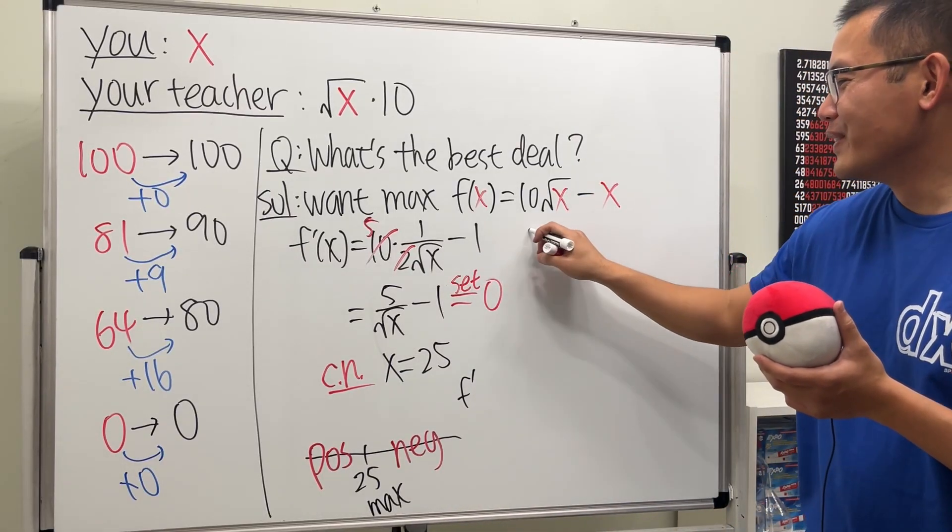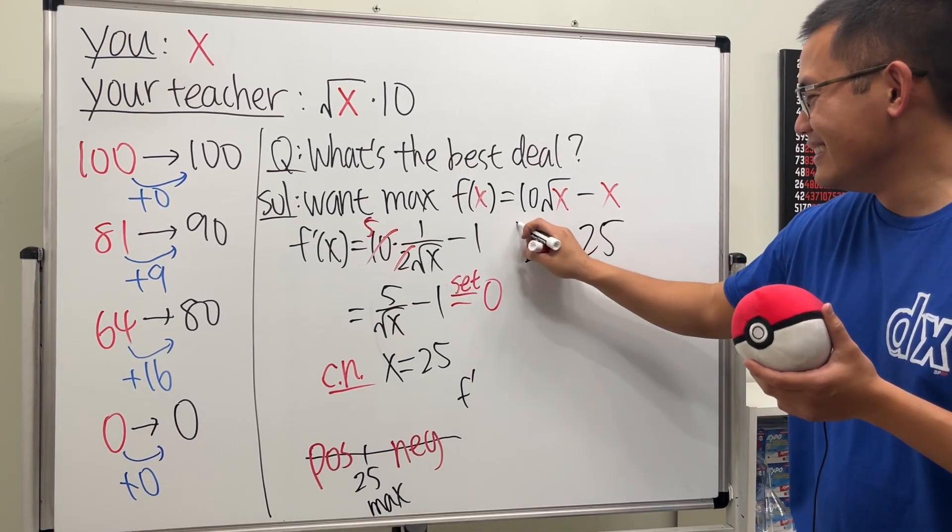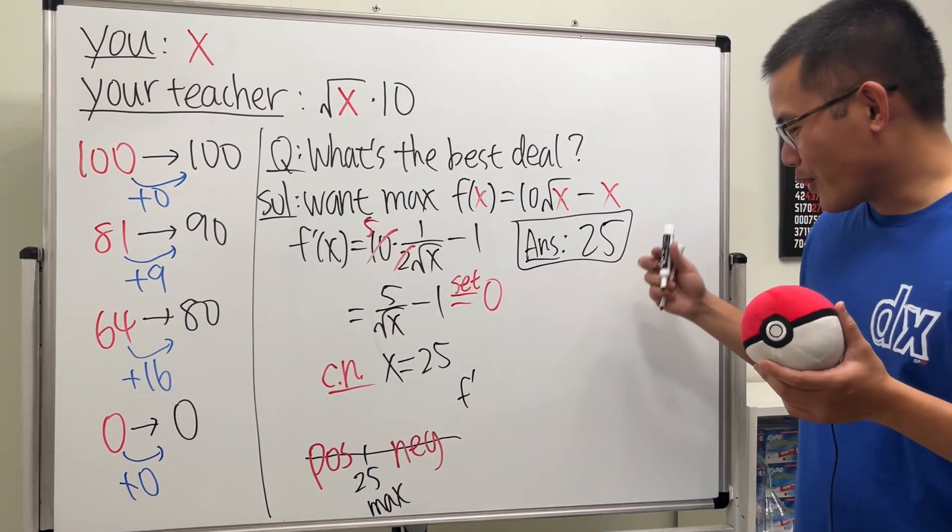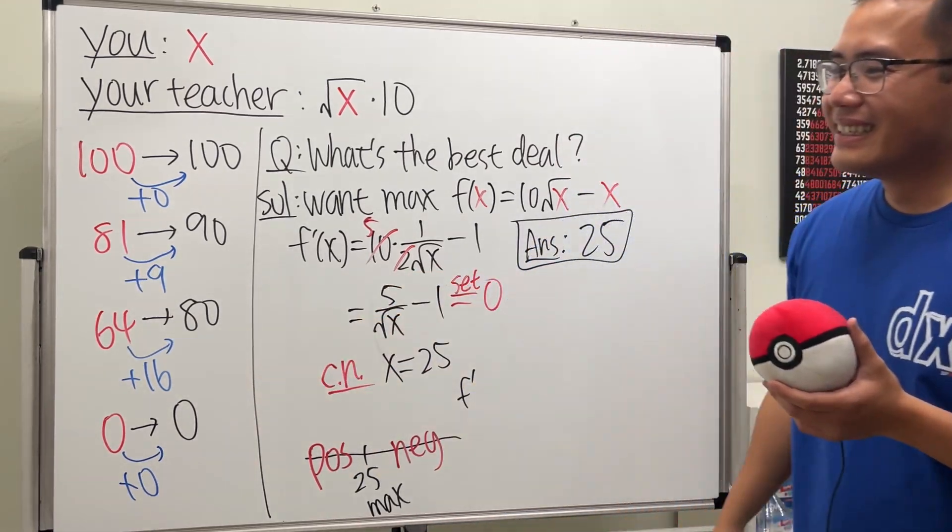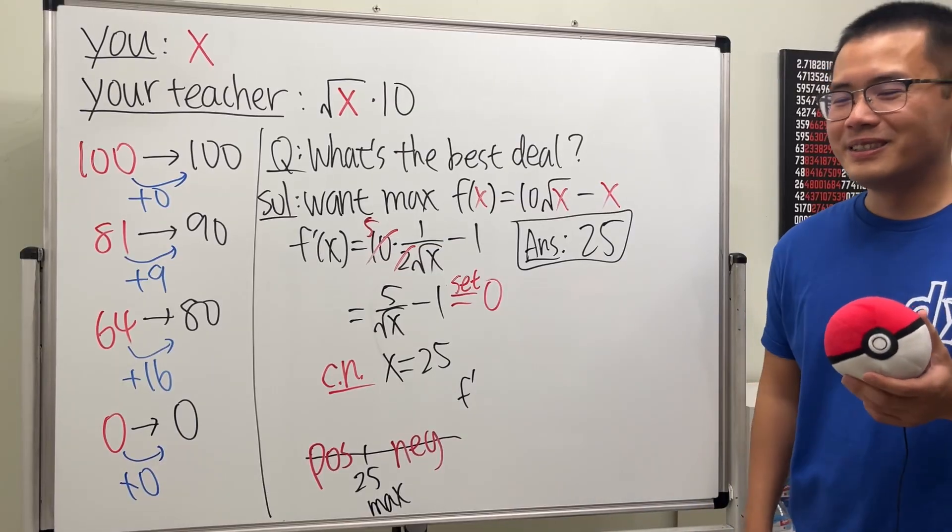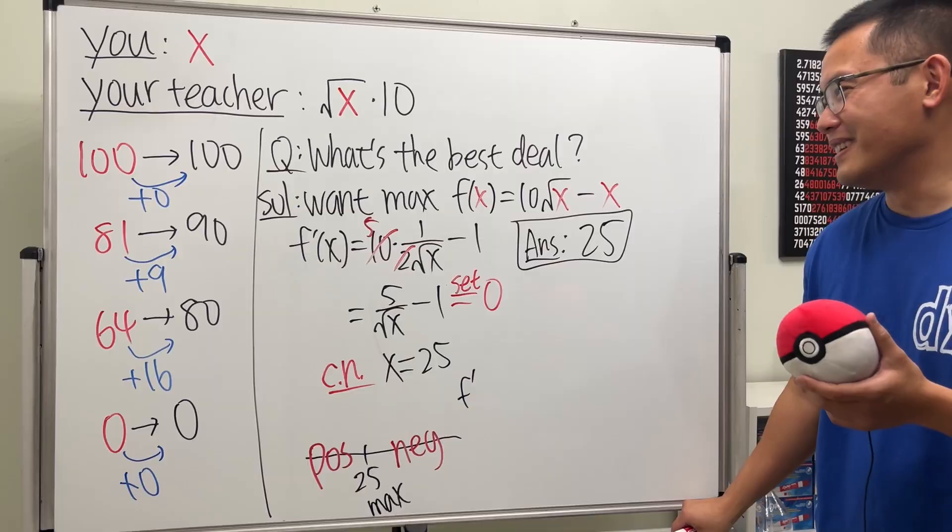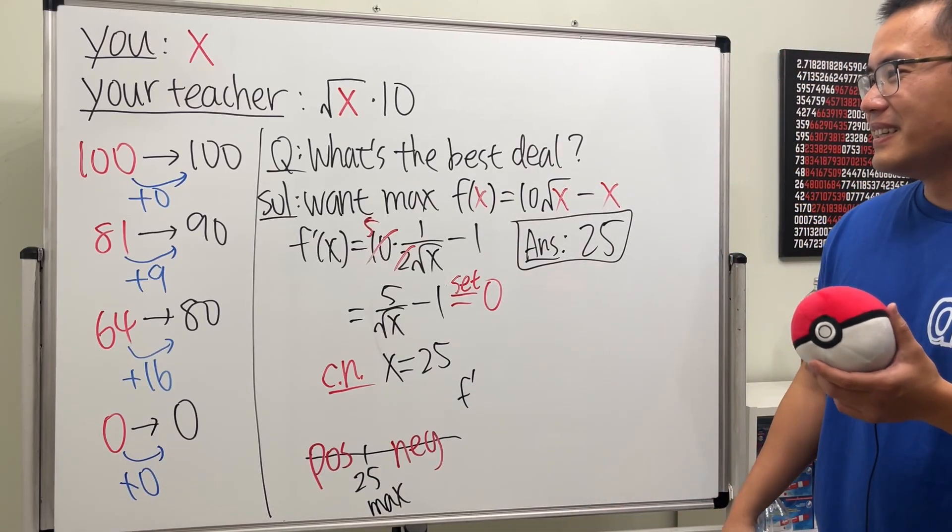So the answer for this question is just 25. And again, I'm not encouraging you guys to aim for this score if your teacher is actually going to do this kind of curve. But yeah, it's a very interesting calculus question in my opinion. And yeah, so thank you so much for sharing this idea here.